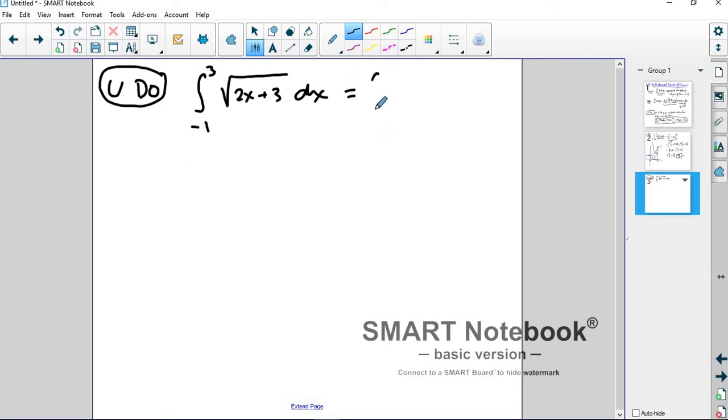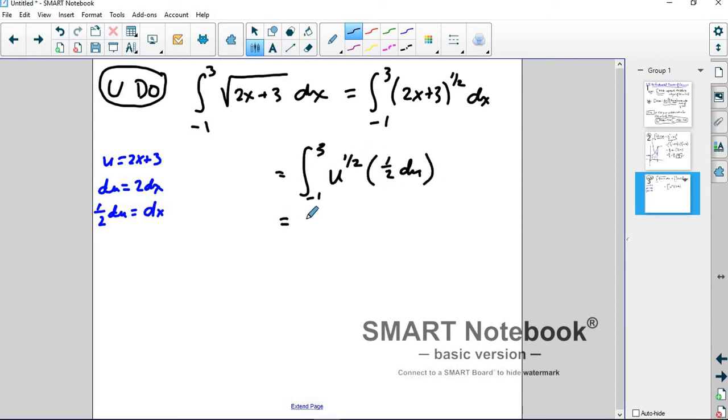So, the first thing I'm going to do is I'm going to think of this as stuff to a power and then I'm going to have to do u-substitution. Technically. So, u is equal to 2x plus 3. Du is 2 dx. I don't have a 2 so I'm going to divide both sides by 2. And so, I end up with the integral from negative 1 to 3 of u to the 1 half and then 1 half du. Pull the 1 half out.